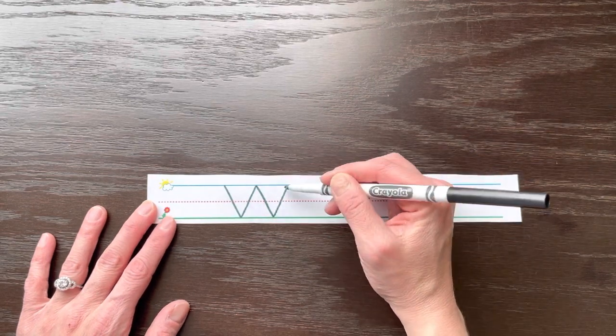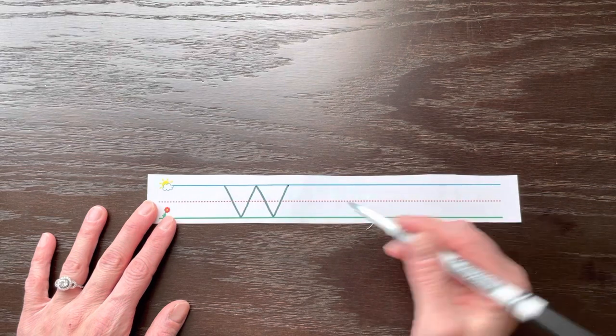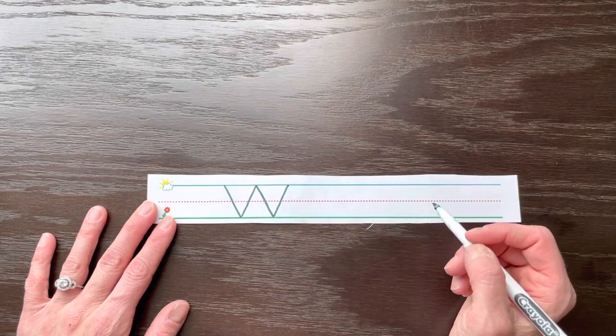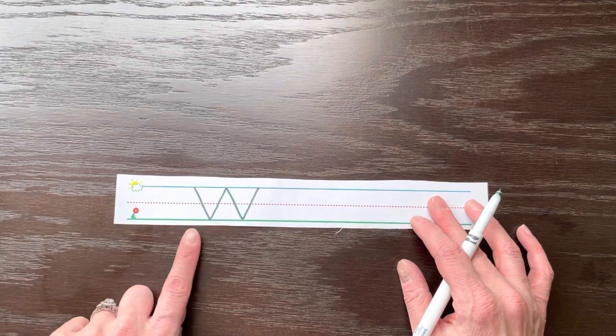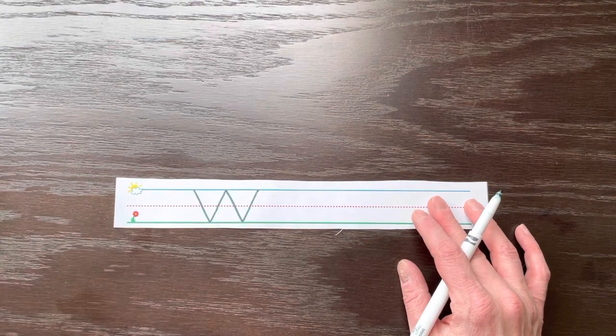So there are two actually letter V's that are stuck together. It's kind of silly that this letter is called W because when we write it it looks like two V's put together.